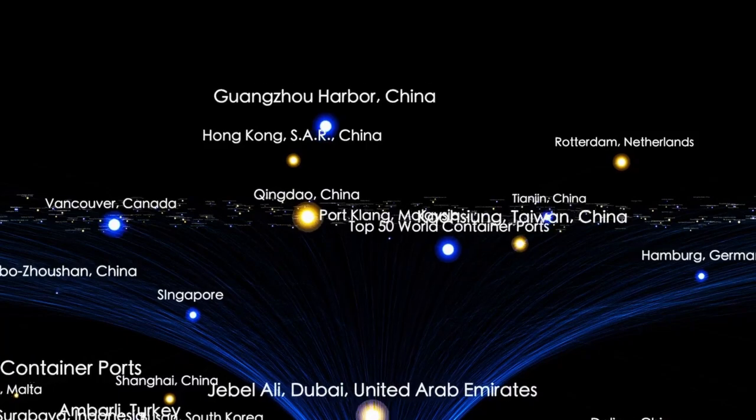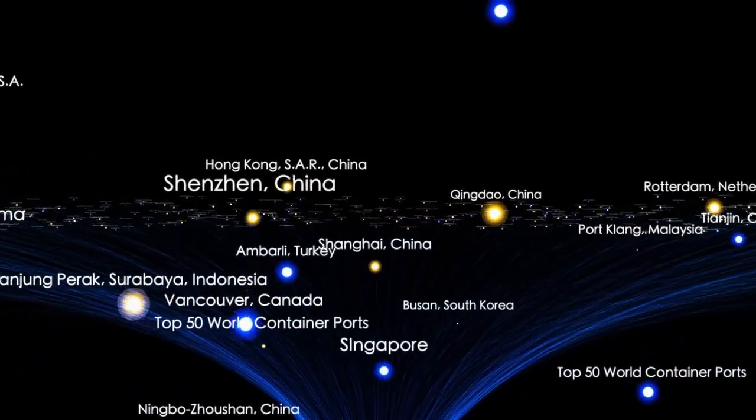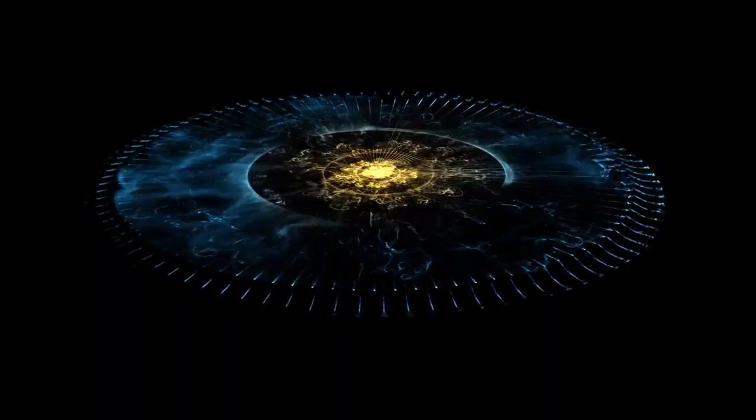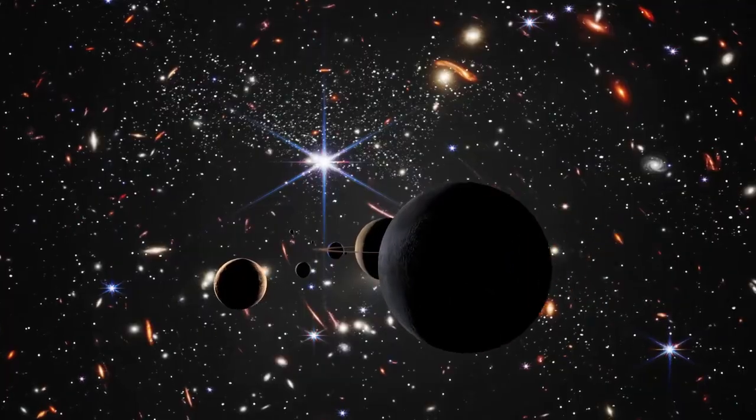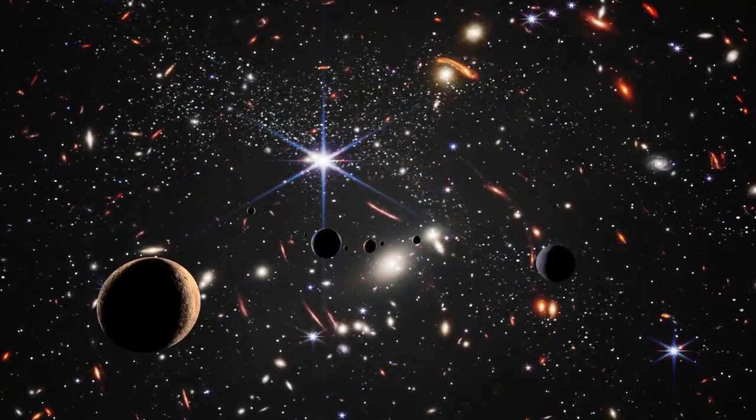When we talk about the universe, we often mean the observable universe, the portion we can see from Earth. This is limited by the speed of light. Because light takes time to travel, we can only observe objects whose light has had enough time to reach us since the beginning of the universe, which was roughly 13.75 billion years ago.